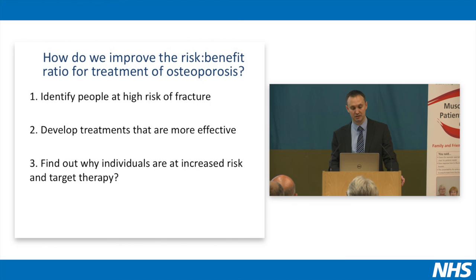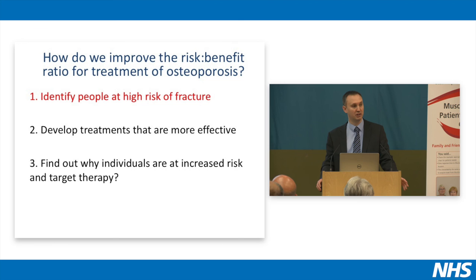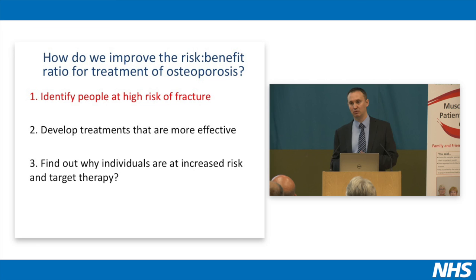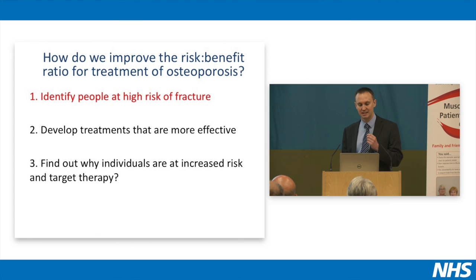Looking at identifying people at high risk of fracture first — as mentioned, there are specific risk factors for fracture. We're very fortunate that in 2008, in conjunction with the World Health Organization, something called FRAX was developed — a fracture risk assessment tool. What it does is use epidemiological research, so in terms of risk factors and patterns of fracture, to allow us to calculate using fairly simple risk factors what the 10-year risk of a major osteoporotic fracture and a hip fracture is.